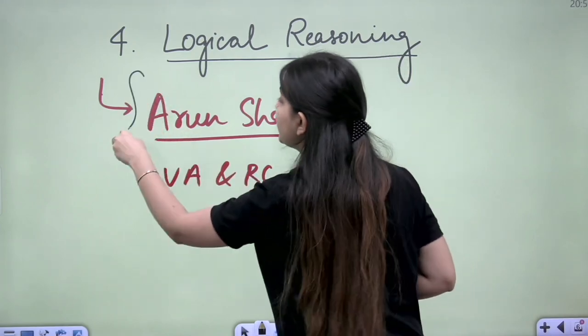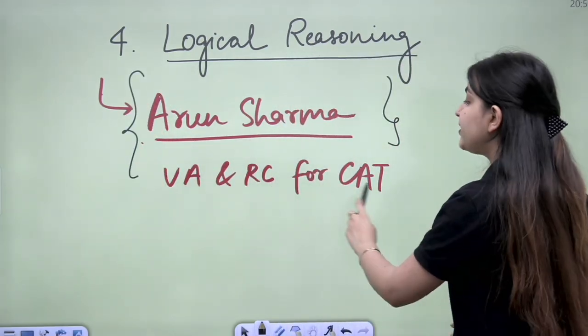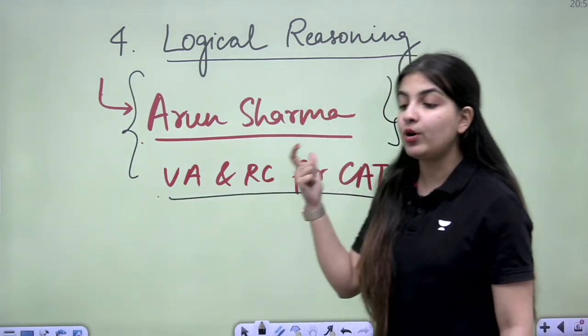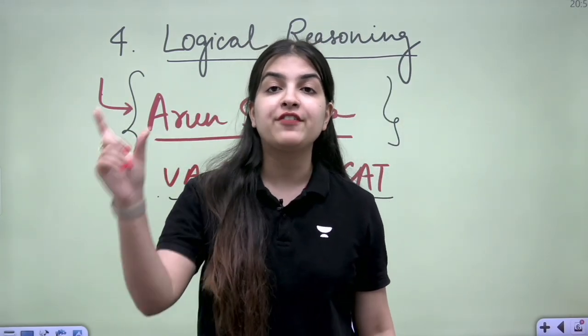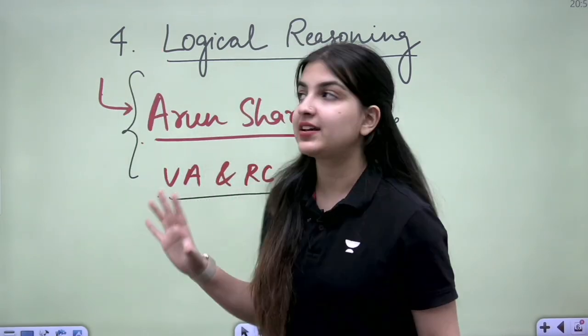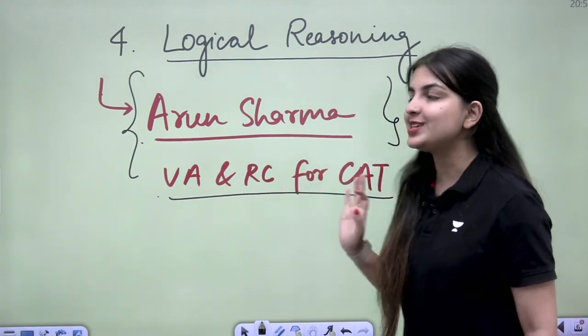So again, what we read in the beginning, Arun Sharma and Minakshi Upadhyay, Verbal Ability and Reading Comprehension for CAT, is the best source. Here, how do you analyze it? When you are asked similar to, or what can be concluded from this paragraph, we will teach all the tricks and tell you how to solve it.